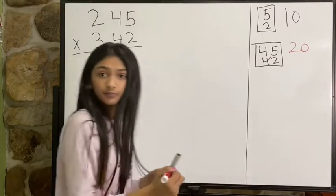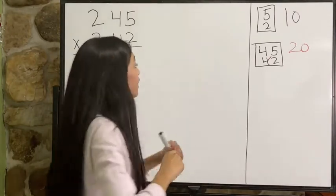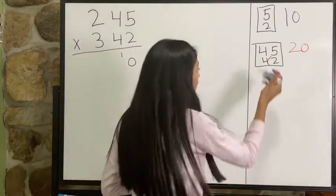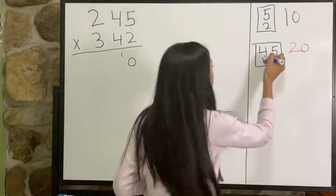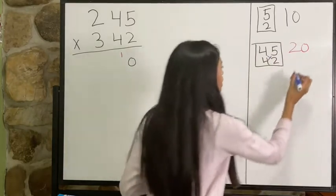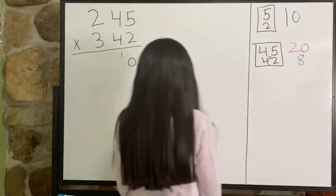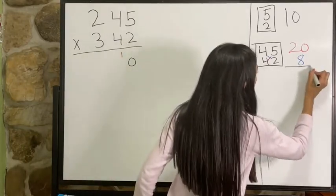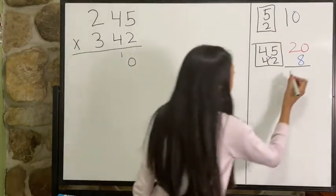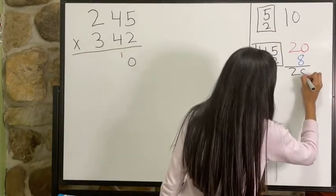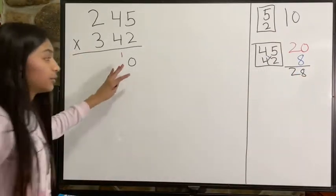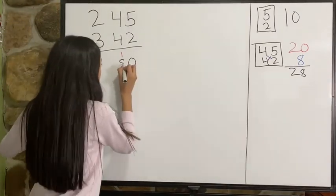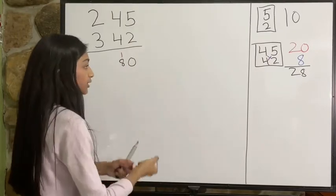So first I'm going to multiply four times five which is 20, and then I'm going to multiply four times two which is eight. Add them all, add 20 and eight together which is 28. So I'm going to put the eight under the one right here, and then two goes on top.